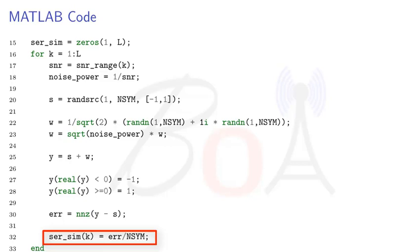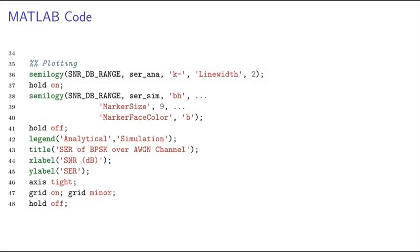This process will repeat in the for loop for all the SNR values from minus 10 dB to 10 dB. After the for loop is done, the SER_sim vector will have the computed simulated SER values. So now we have both the analytical and simulated symbol error rate of BPSK signal for the SNR range of minus 10 dB to 10 dB.